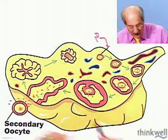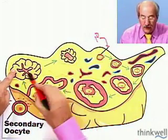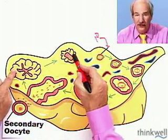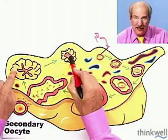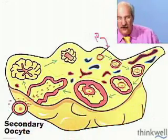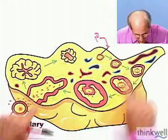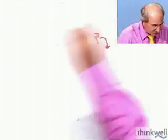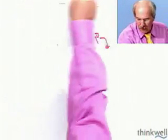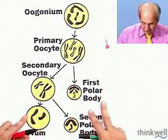As a side note, the follicle turns into something called the corpus luteum, which those of you familiar with the menstrual cycle know all about — but that's another story. Here we have the secondary oocyte. As for the polar body, it's gone — it's tiny, forget it.